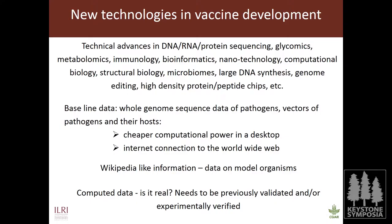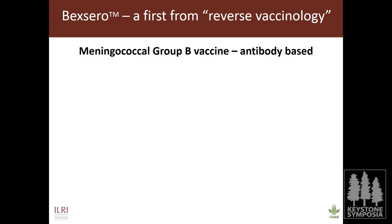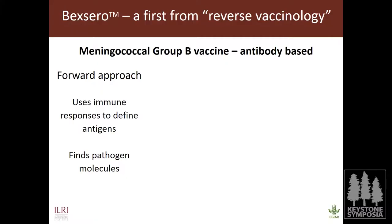There's been a big hype in reverse vaccinology, and as new technologies get developed it becomes fashionable to do that work. But what has been the success? The vaccine called Bexsero is the first product from a reverse vaccinology approach. It's a vaccine developed for meningococcal group B which primes a surprisingly efficient antibody response. It had been very difficult to develop a vaccine against meningococcal group B, because most antibody responses go toward carbohydrates.